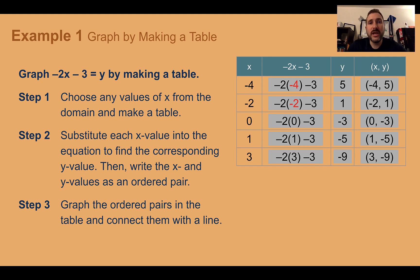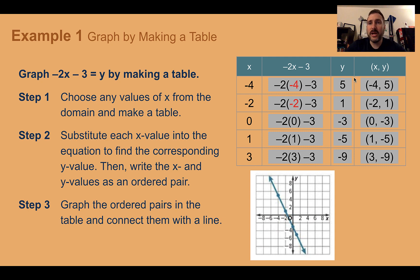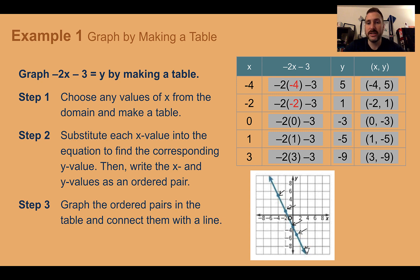Once we have all our coordinates, we can graph them. They already graphed it for us, but as you can see, they took each coordinate — here's negative 4, 5 — and graphed it. Then negative 2, 1, then 0, negative 3, then 1, negative 5, and 3, negative 9 is down here. Then last, they connected them with a straight line. We know we're doing it correctly if our dots are in a straight line. Also notice, they put arrows on the end to show it would keep going in either direction.